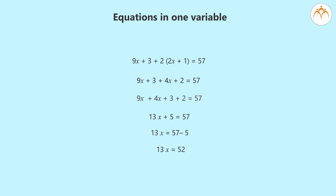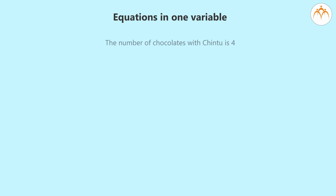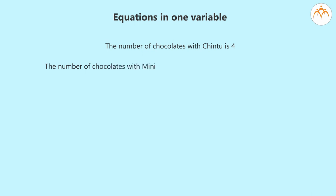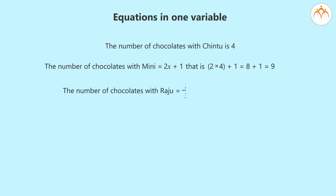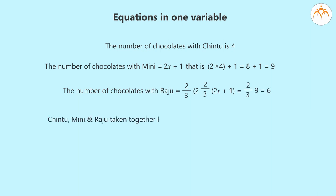From 13X equals 52 we get X equals 4, so Chintu has 4 chocolates. Mini has 2X plus 1, that is 2 into 4 plus 1, which equals 9 chocolates. Raju has 2/3 into 2X plus 1, which equals 6 chocolates. Chintu, Mini and Raju together have 4 plus 9 plus 6, which equals 19 chocolates — confirming our answer.